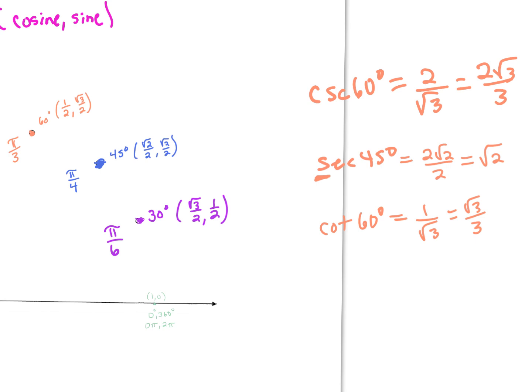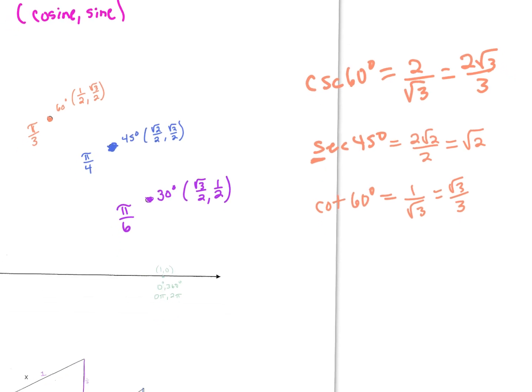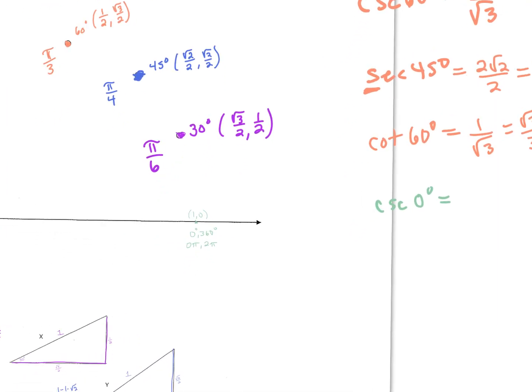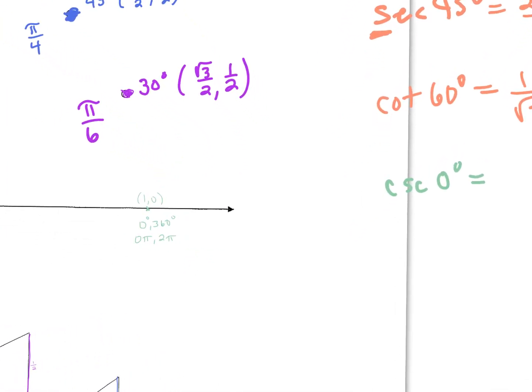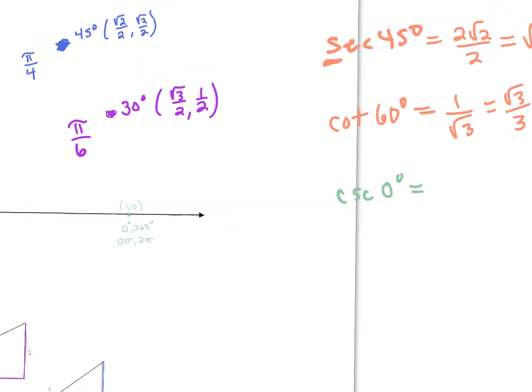Now let's look at some quadrantal angles. Cosecant of 0 degrees: cosecant is the reciprocal of sine, so we look at the y-coordinate and flip it. At 0 degrees y is 0, which we think of as 0/1. If we flip that we get 1/0, which is undefined.